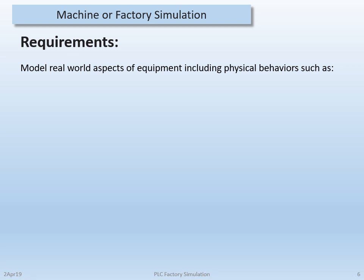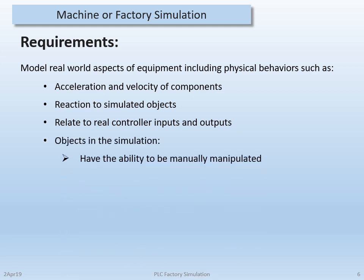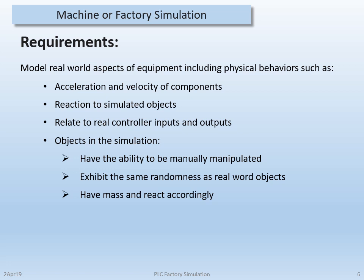So let's take a look at our requirements: to model real world aspects of equipment including physical behaviors such as acceleration and velocity of components, reaction to simulated objects, relating real controller inputs and outputs to the environment. The objects in the simulation have to have the ability to be manually manipulated, exhibit the same randomness as real world objects, have some mass and react accordingly, and of course observe the same physical rules.